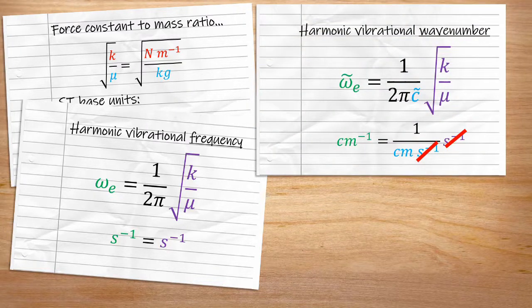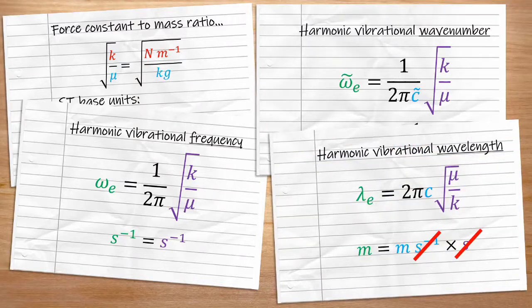Dividing the frequency by the speed of light gets us the wave number. Multiplying by the speed of light gets us the wavelength. So that's the main formula you'll need to work out a force constant. Obviously you'll need to do some rearrangement yourself, and also check units to make sure you're not accidentally calculating wavelength when you should be calculating wave number.